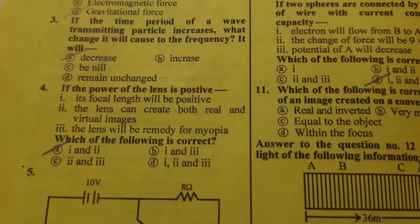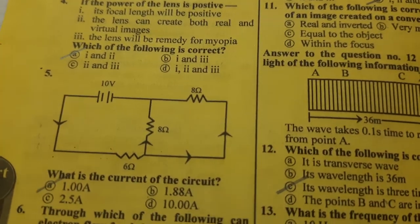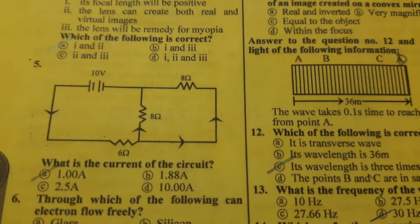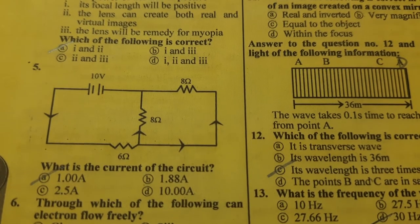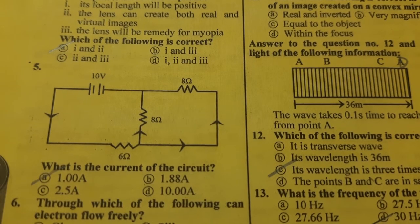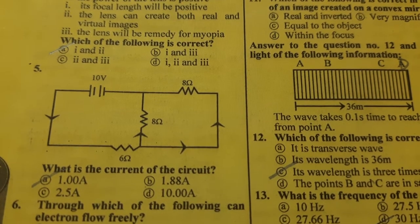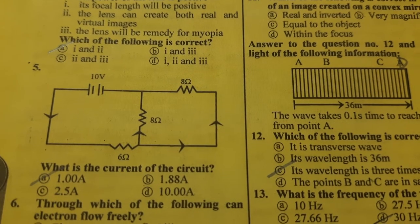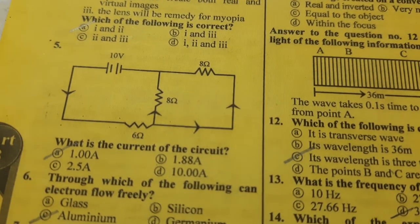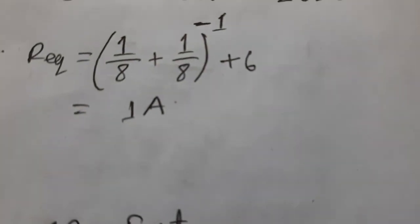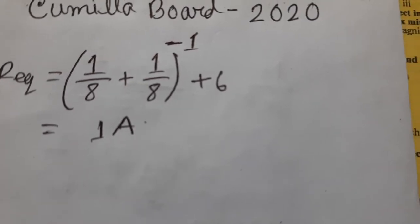Question number five: here we have a circuit with two resistances of 8 ohm and 8 ohm in parallel, and a 6 ohm resistance in series. The equivalent resistance: one-over-eight plus one-over-eight inverse, plus six. The final equivalent resistance gives a current of one ampere — answer option A.